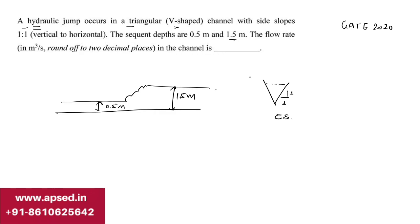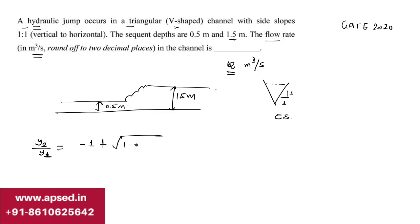The question asks for the flow rate in m³/s. We are given the sequent depths and the channel shape. Now, if you've studied hydraulic jump, the most common sequent depth relation you might know is: y₂/y₁ = (−1 + √(1 + 8F₁²)) / 2.